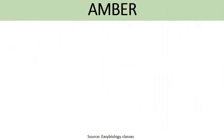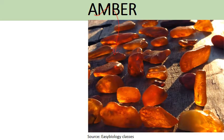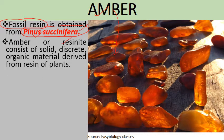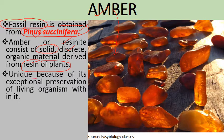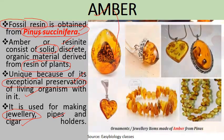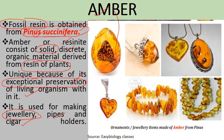Another important resinous substance is amber, which is a fossilized resin obtained from Pinus succinifera, also called resinite. It consists of solid, discrete organic material derived from the resin of plants and is unique because of its exceptional preservation of living organisms within it. It is used for making jewelry, pipes, and cigar holders.